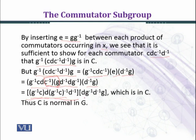Then we shall obtain (d^-1g^-1)^-1 and d^-1, and the inverse of g^-1 is g. This is another commutator which is in C. You can see that g^-1(cdc^-1d^-1)g belongs to C because it has two commutators. Thus C is a normal subgroup of G.